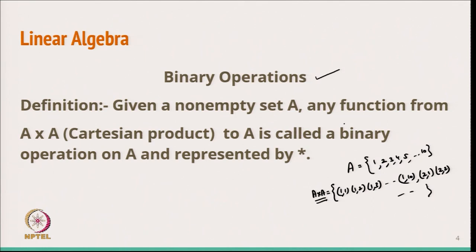So, binary operation means: given a non-empty set A, any function from A cross A to A is called a binary operation on A, represented by star. We take A cross A and that maps to A. For example, if I take 1 plus 1, that gives 2, and 2 is also in A. So I have defined this binary operation as addition. This is how we can define binary operations.